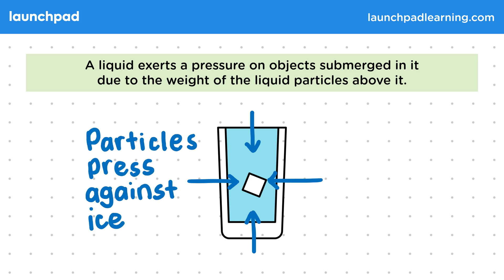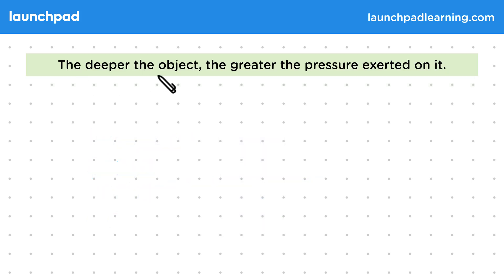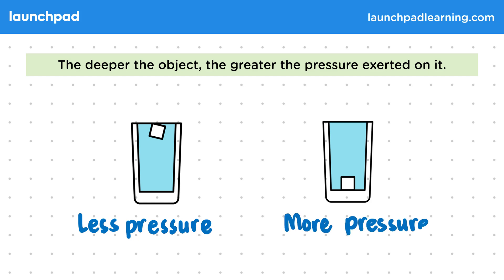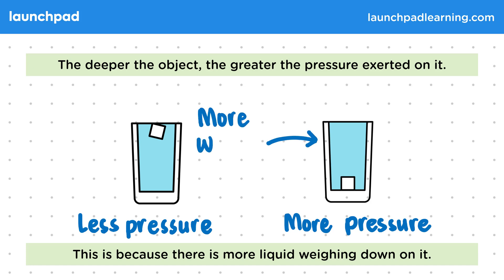So how does this pressure change as the ice cube sinks? The deeper the object, the greater the pressure exerted on it. An ice cube at the bottom of a glass experiences more pressure from the water than an ice cube floating at the top, because there is more liquid weighing down on it.